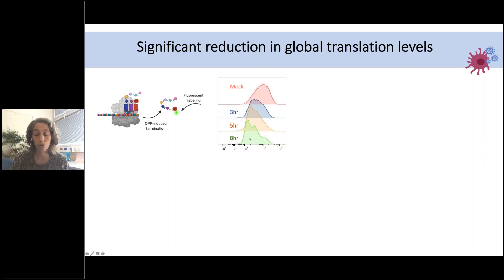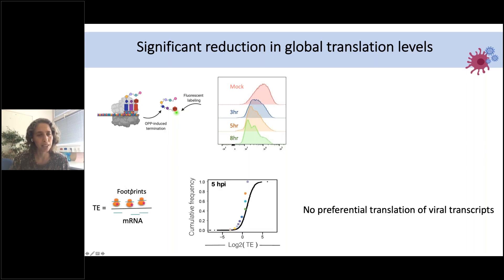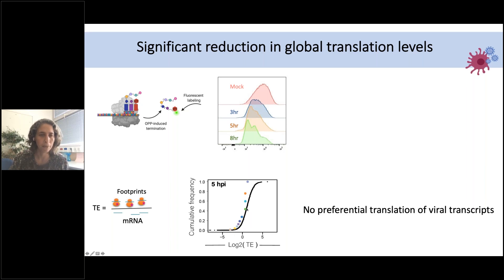As Alan described, we can calculate translation efficiency, which reflects how well each gene is translated based on the amount of mRNA molecules. We divide the number of footprints by the number of mRNA reads. Plotting translation efficiency of human genes in black and canonical viral genes in different colors, we actually don't see any major differential translation of viral transcripts — they are basically translated as efficiently as cellular mRNA, if anything slightly worse. This suggests that although there is massive reduction in translation, both host and viral RNA are reduced; there's no selective preference for translating viral mRNA.